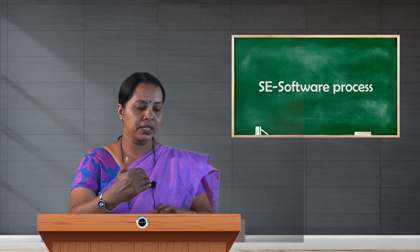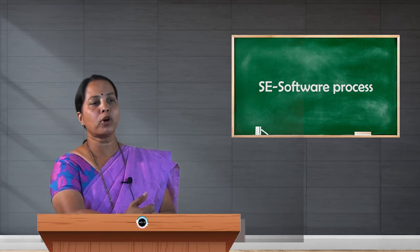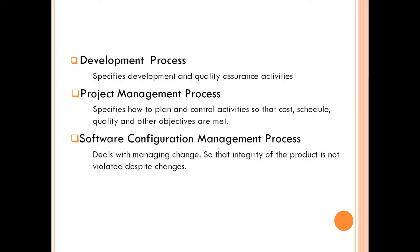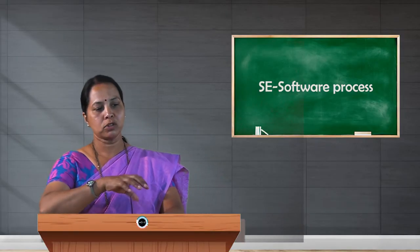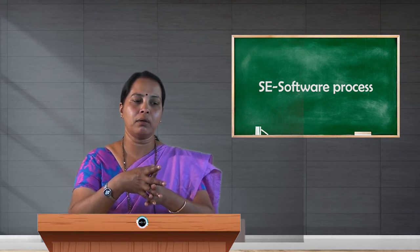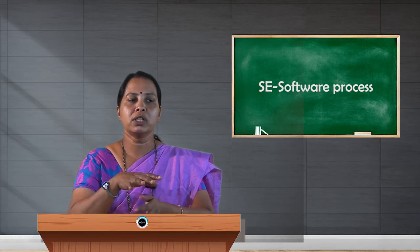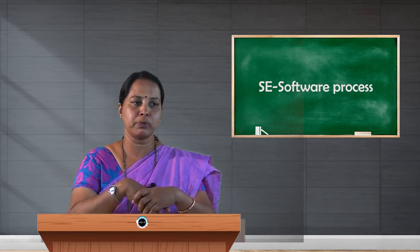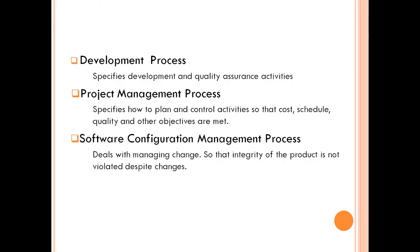Another part is the project management process. Along with development, the software should be under control always — setting the cost, providing resources, total planning, schedule setting, and the quality measures that need to be taken. The project management process mainly specifies how to plan and control activities so that cost, schedule, quality, and other objectives are met.